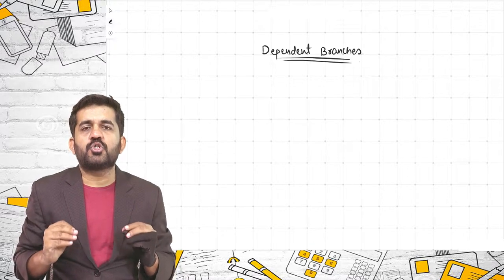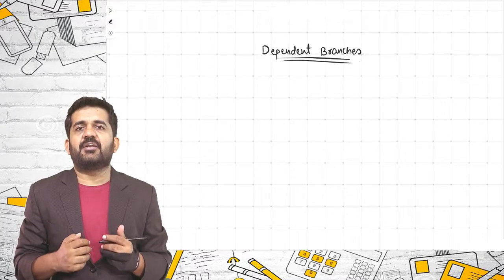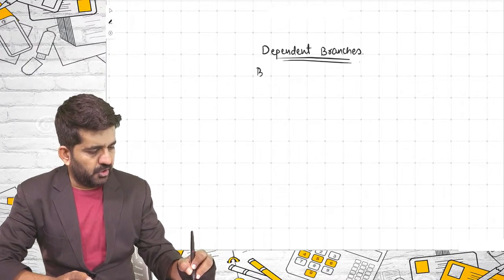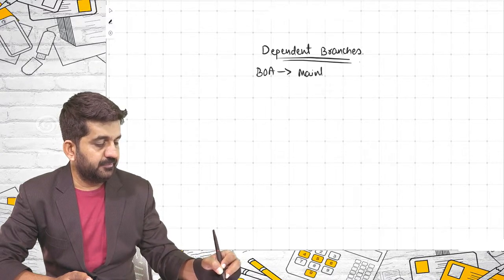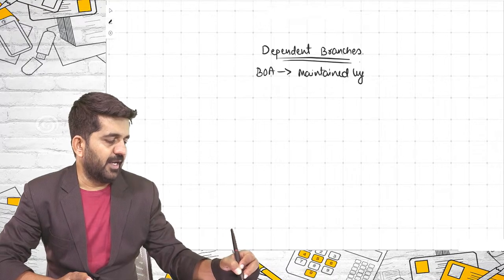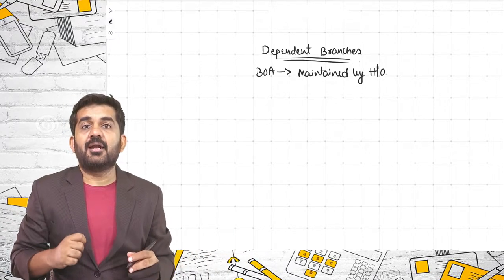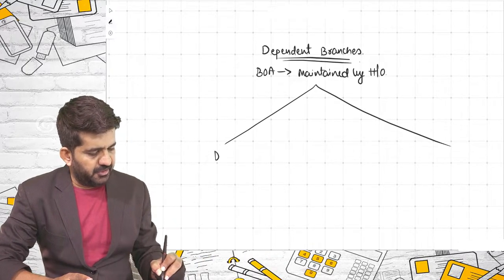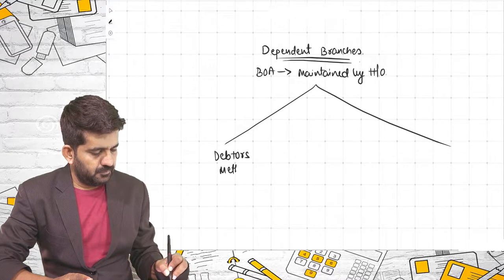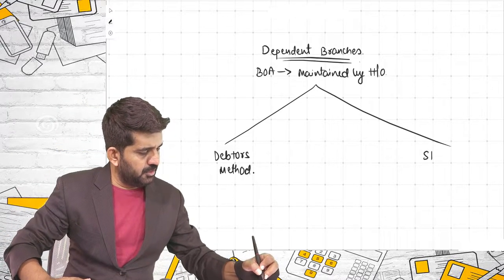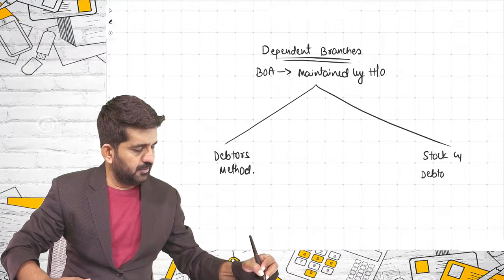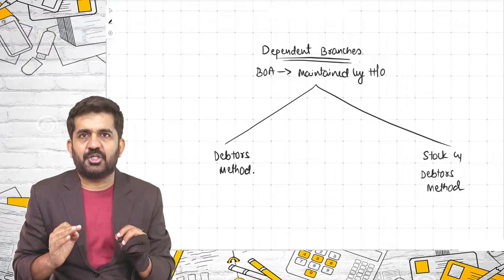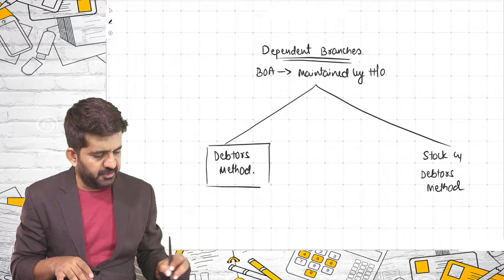For dependent branches, books of accounts are maintained by the head office. All journal entries are passed by the head office, which keeps a separate account for each particular branch. There are two methods by which you can keep books of accounts of dependent branches. Let us first understand the first method — the debtors method.